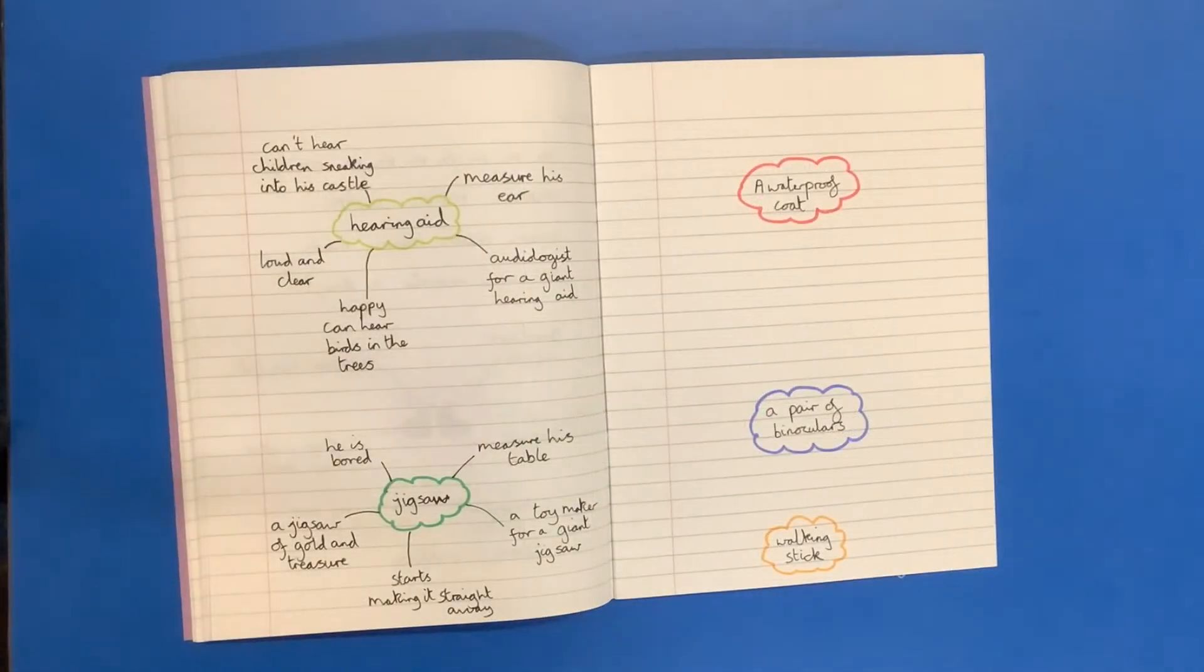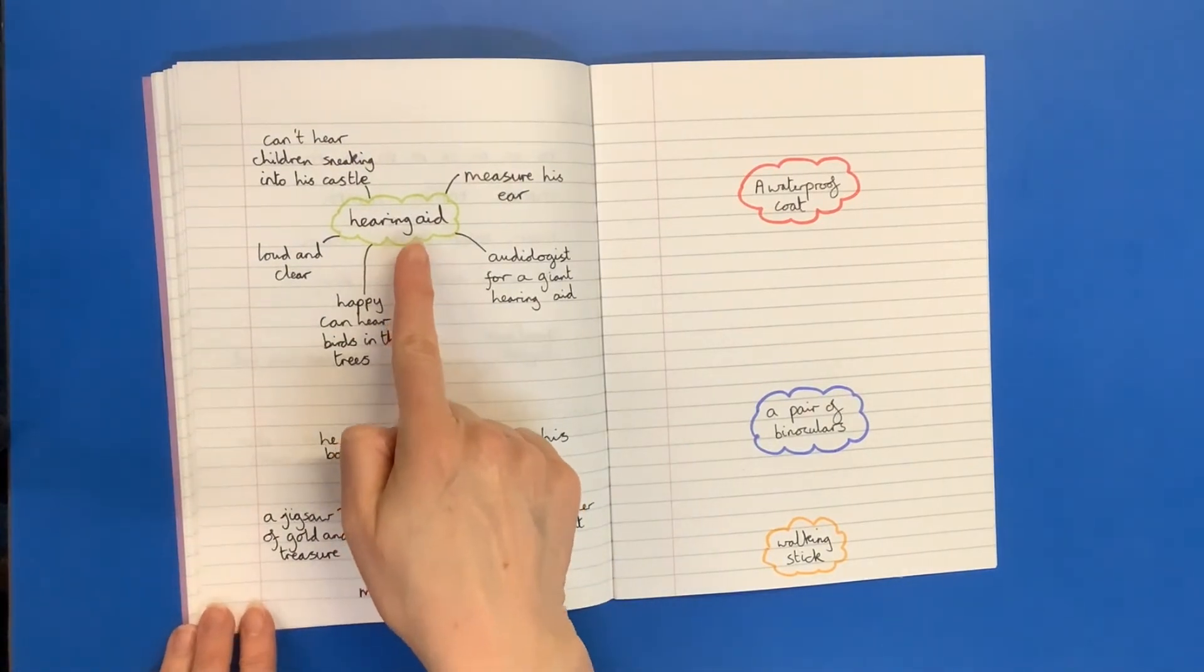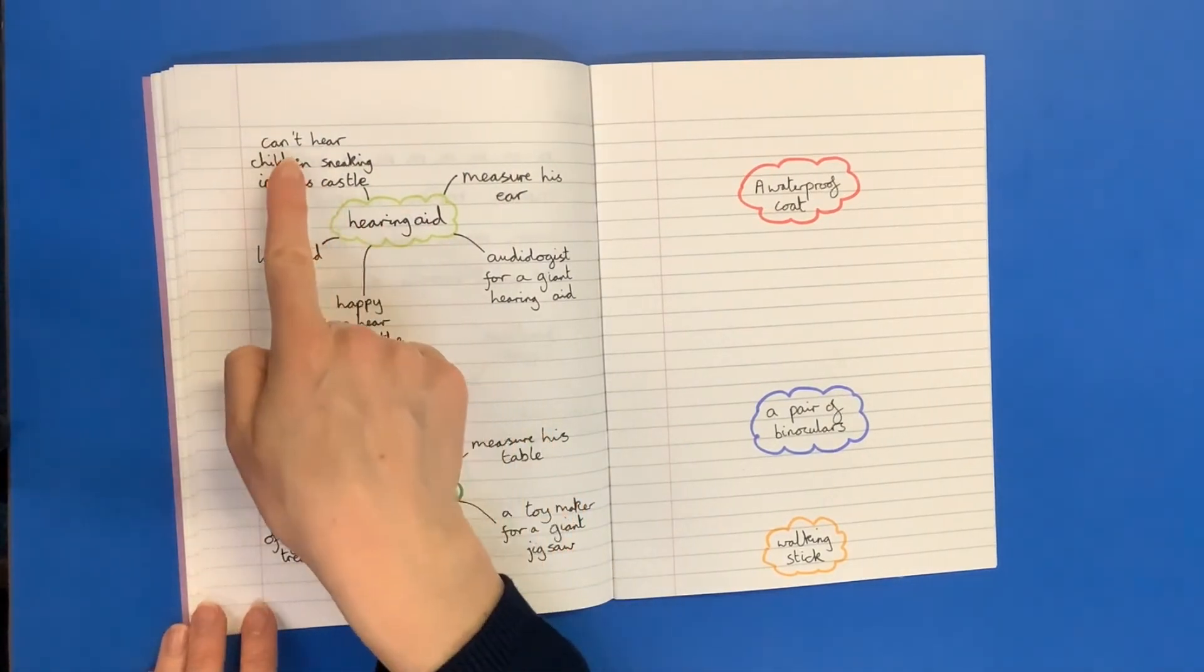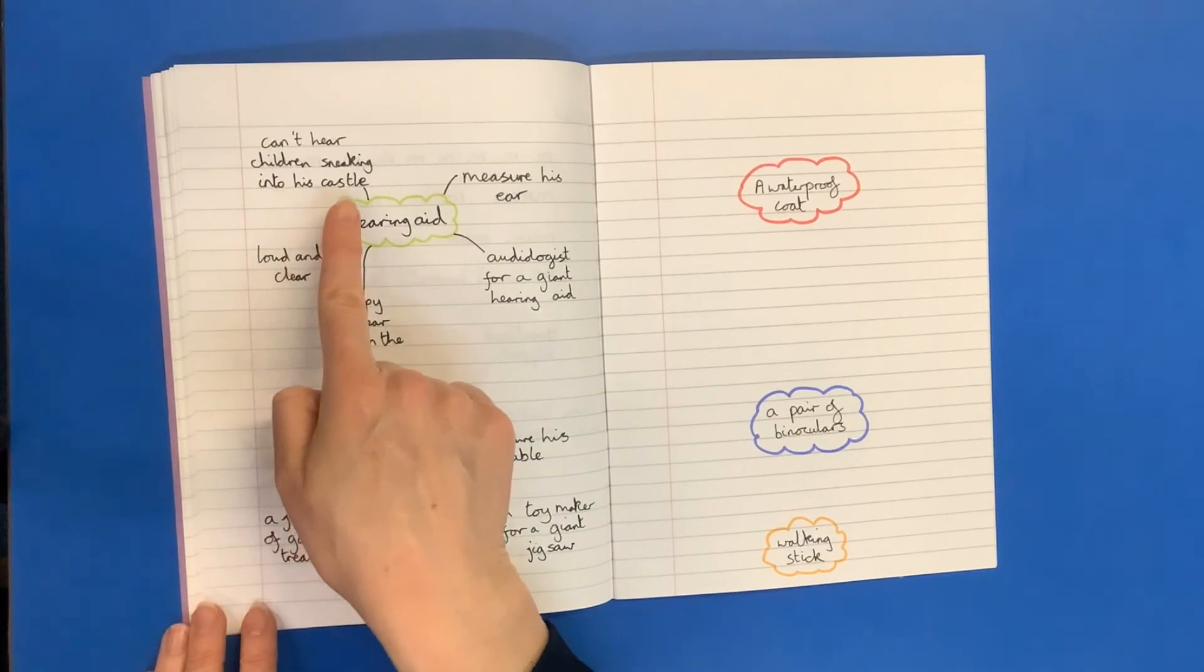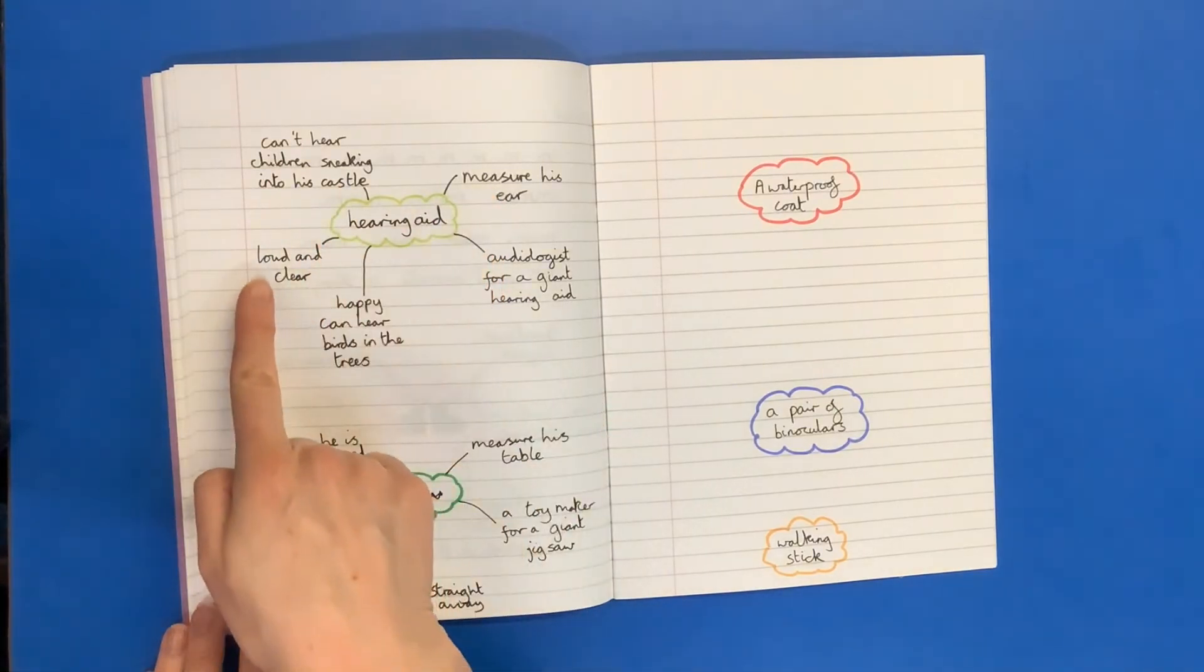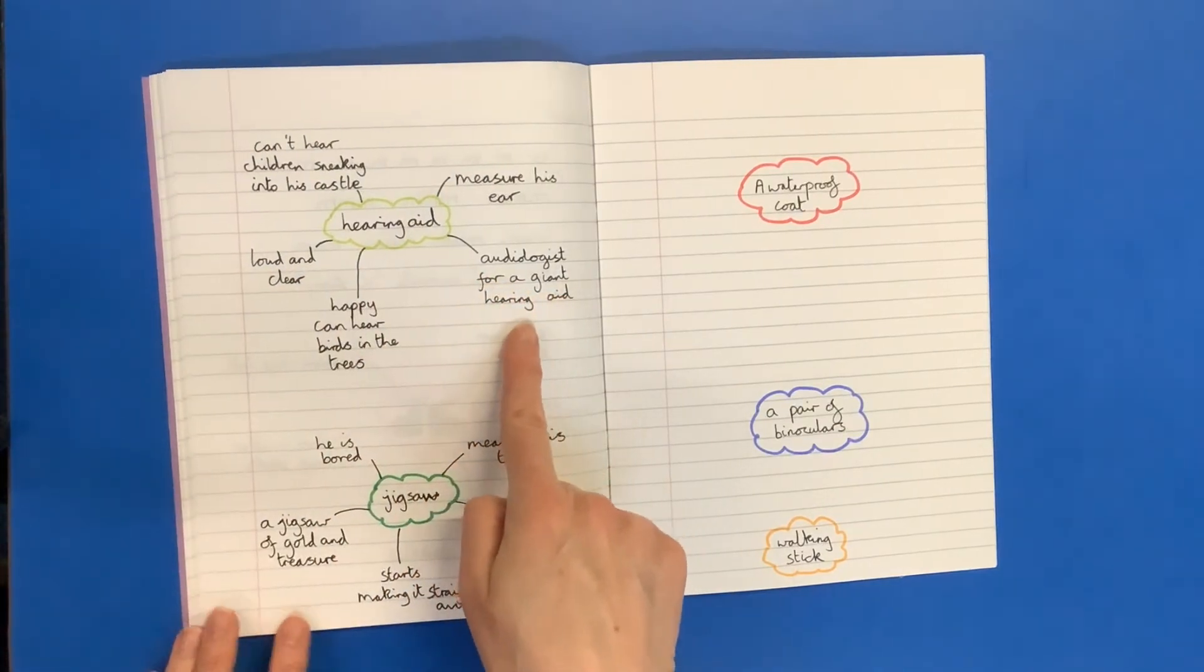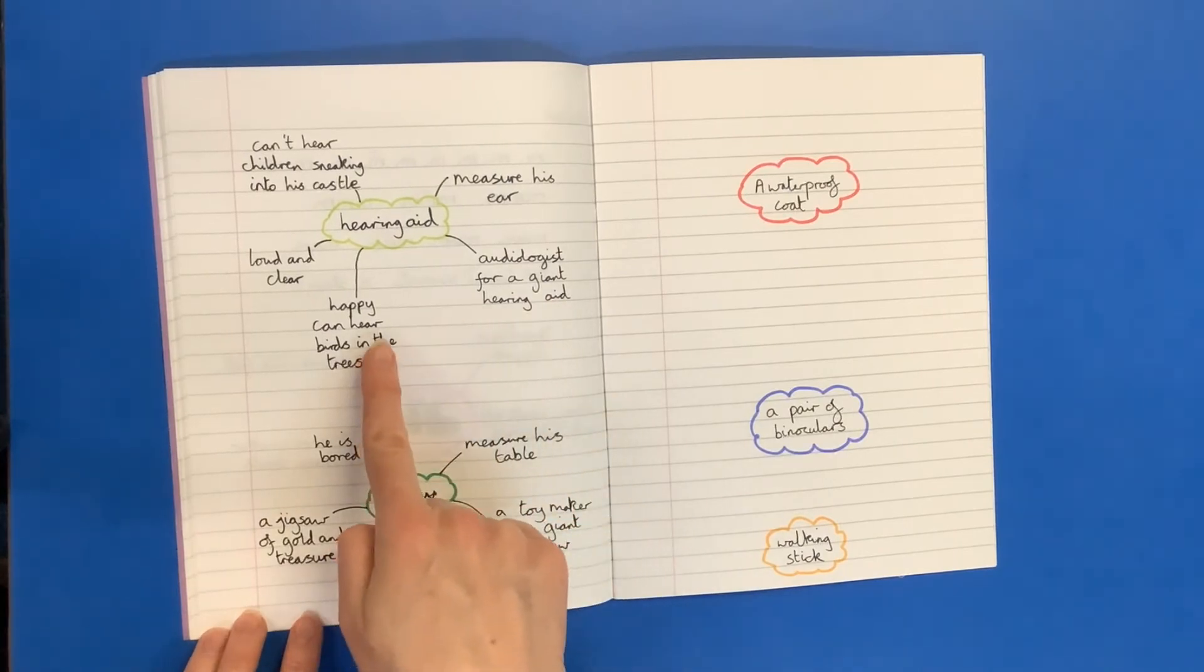So here's a couple more ideas from me. I thought maybe he might want a hearing aid because he can't hear children sneaking into his castle anymore. So Jim would have to measure his ear. He would like the hearing aid to be loud and clear. Jim would have to go to the audiologist for a giant hearing aid. And at the end he would be happy because he can hear the birds in the trees.